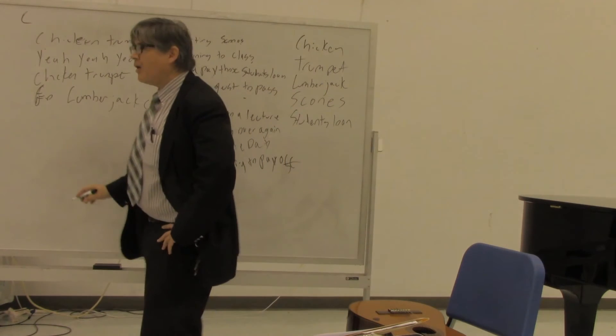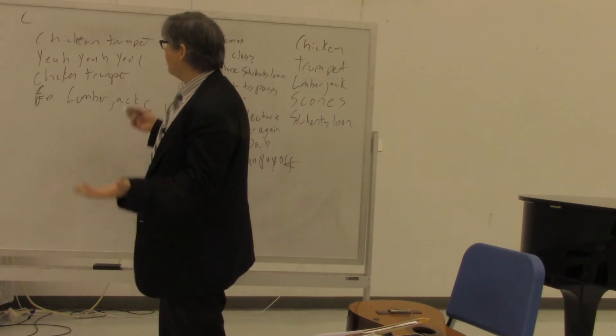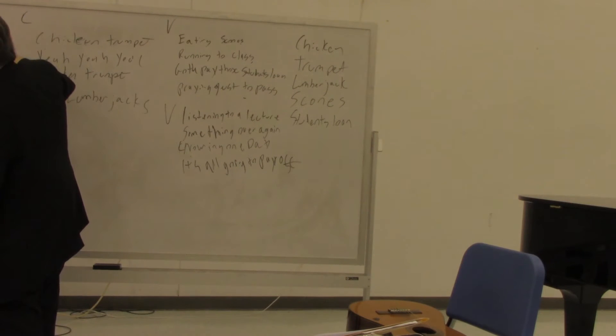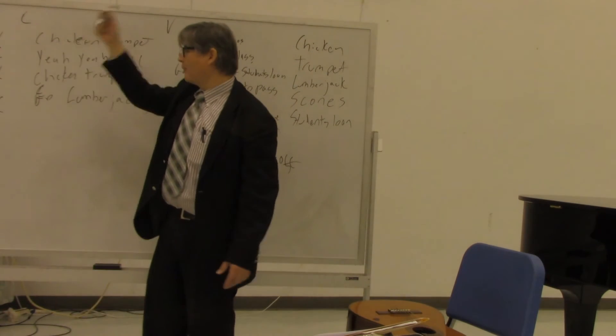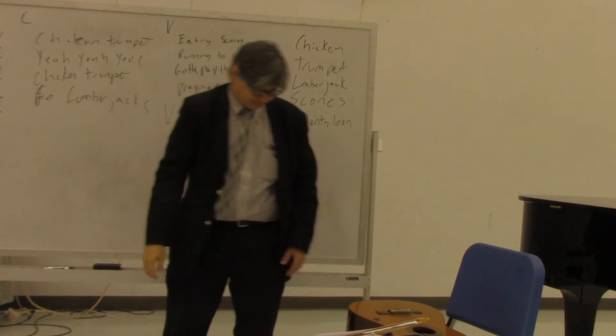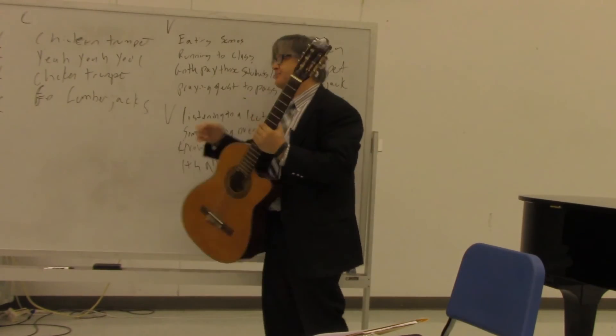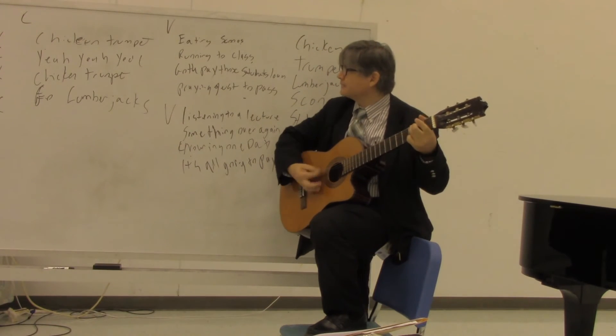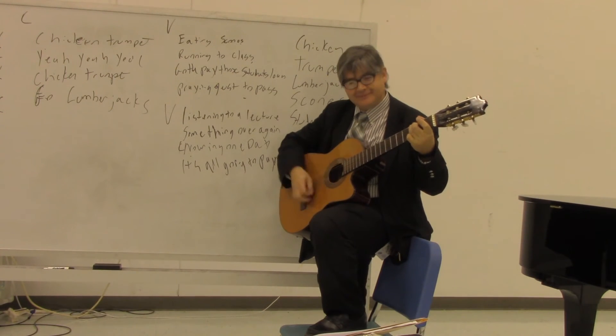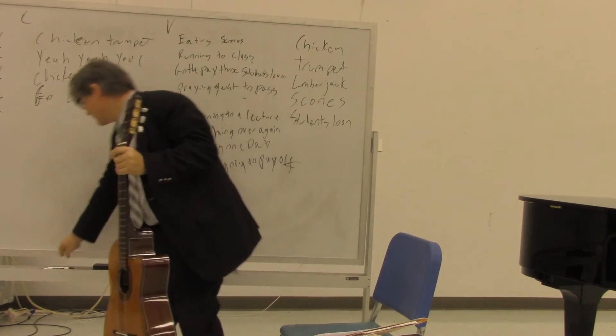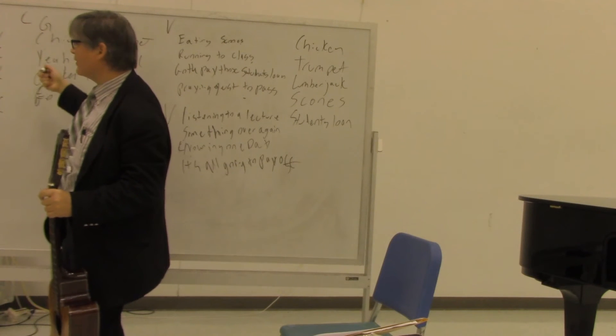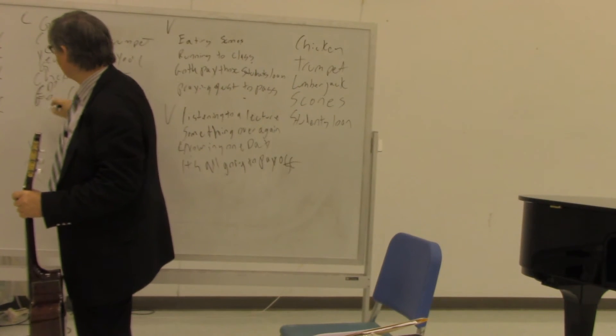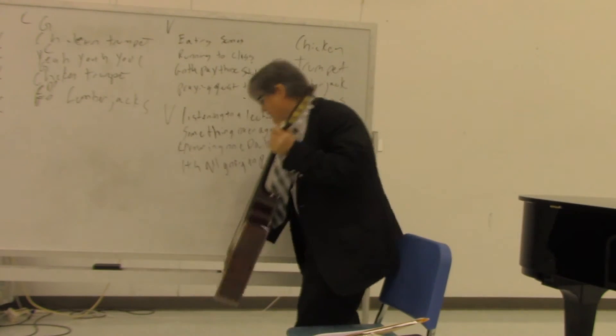Now I got my verse and chorus and verse, so now I can come up with a form. If I want to do a little bit of introduction, I'll put introduction, and I'll start off with a verse, then I go to a chorus, verse and a chorus, maybe one more chorus there. So that's going to be the form of the song. Now I got the words right, now I need to come up with a chord progression that goes along with this. I'm just going to pick key of G right now. Chicken trumpet. Yeah, yeah, yeah. Chicken trumpet. Lumberjack. So I'll put the chord over the word I'm singing: G, C, G, D7.